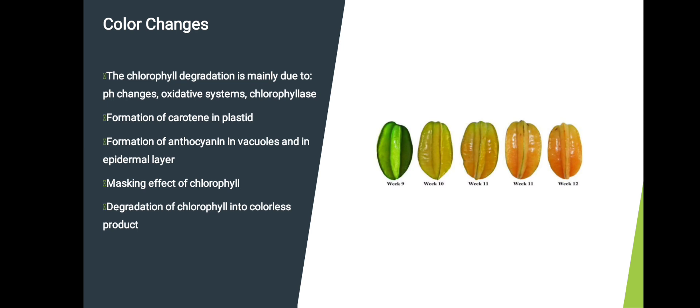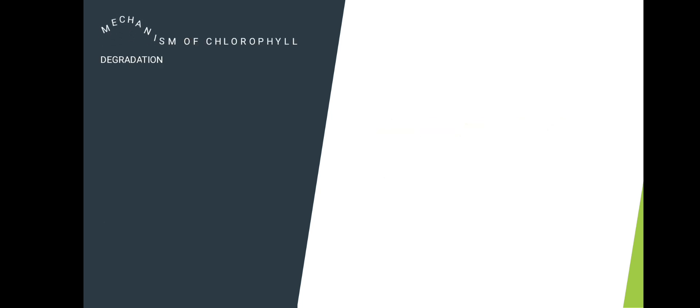Chlorophyll degradation is mainly due to pH changes, oxidation systems, and chlorophyllase activity. It also involves formation of carotene in plastids, formation of anthocyanin in vacuoles and in the epidermal layer, masking effect of chlorophyll, and degradation of chlorophyll into colorless products.